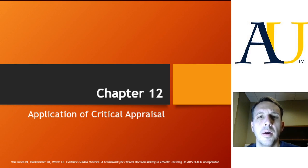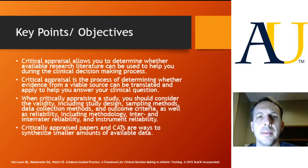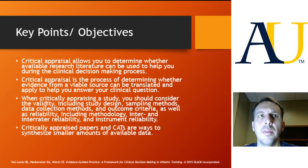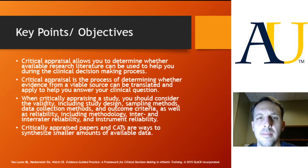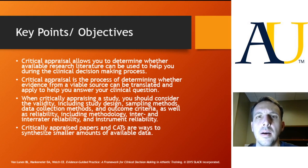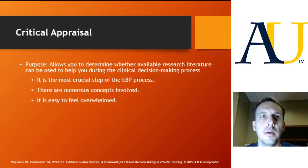We're going to chat now on how we can go about doing that very practically. As far as our key points and objectives, the first two are very summative in nature. Remember that this critical appraisal is about determining whether we can use the research we've found during our clinical decision making process. Then we'll talk about a few ways we can actually disseminate our process to others if that is something we choose to do.